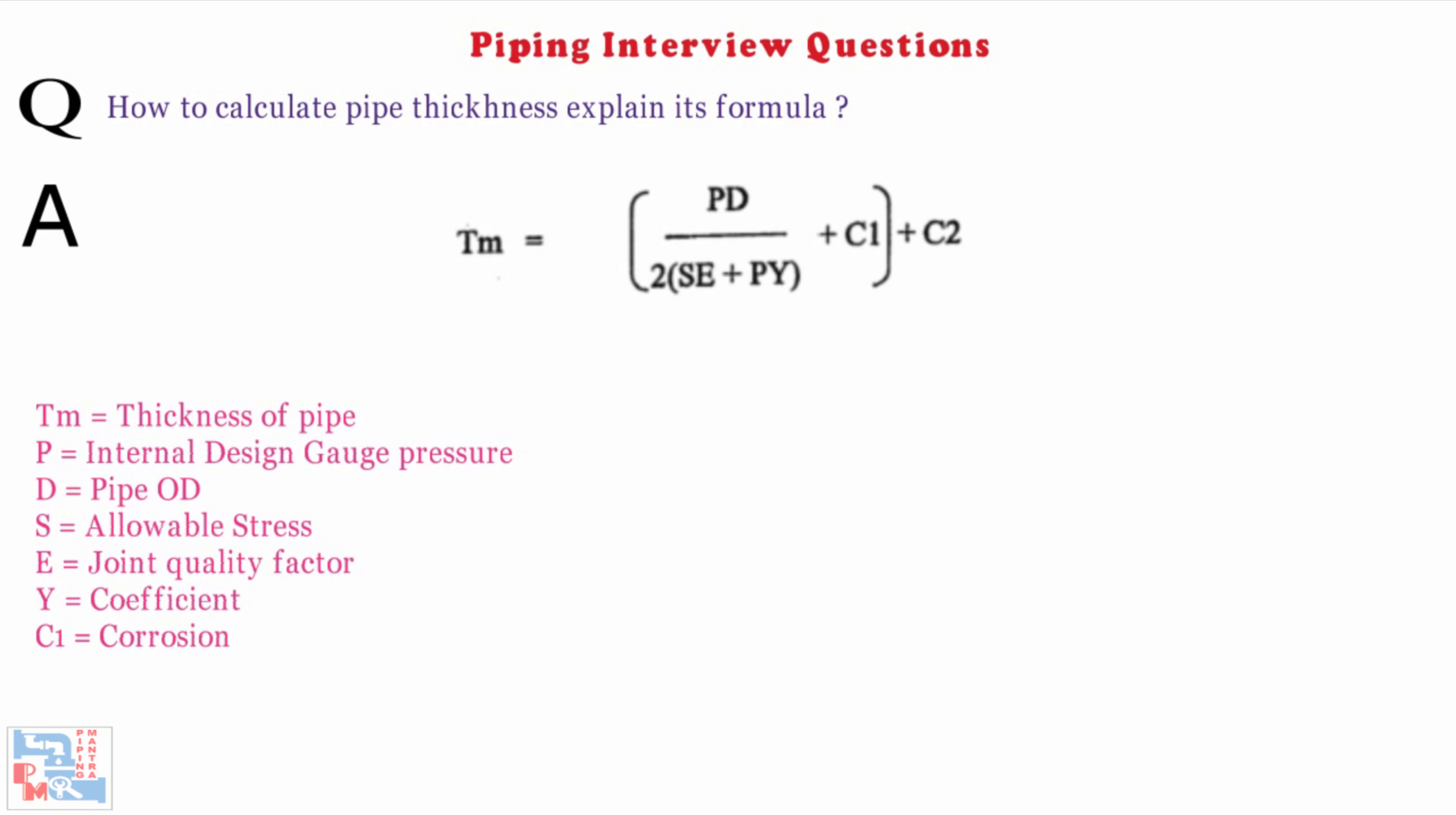C1 is the corrosion allowance which is 1.6 mm in general for carbon steel and 0 mm for stainless steel. C2 is the depth of thread used only up to 1.5 mm. Thickness is corrected to consider the mill tolerances of 12.5%, which is 8 divided by 7 in the formula. So the final pipe thickness is 8 by 7 into PD by 2SE plus PY plus C1 plus C2.